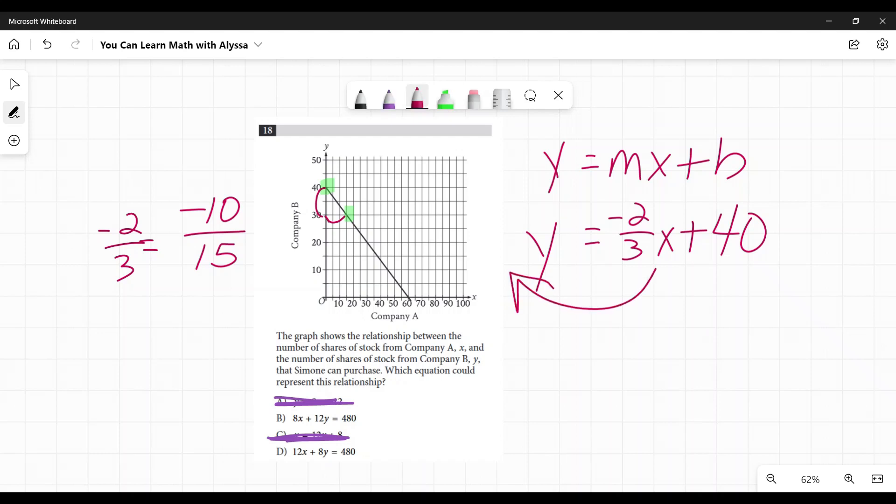First, I'm going to move that x over here so that it's in standard form with x and y on the same side. To do that, I need to add 2/3x to both sides because that counteracts the negative 2/3x. So I have 2/3x plus y equals 40.